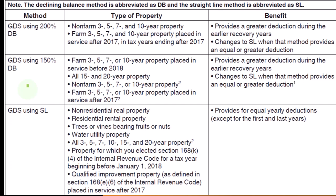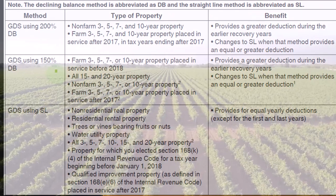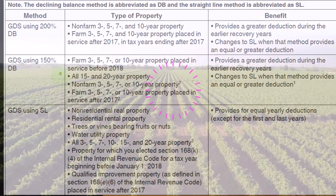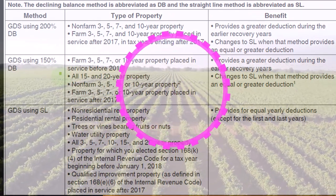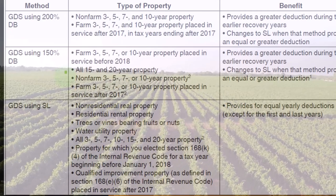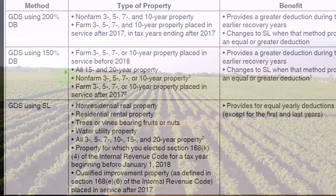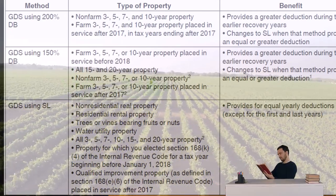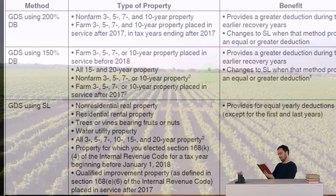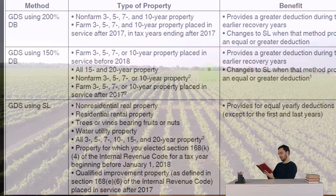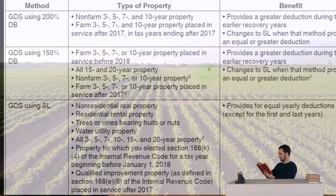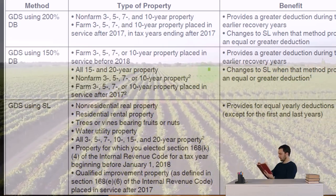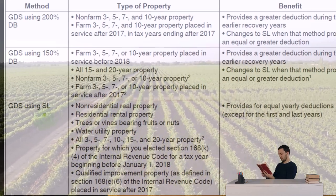GDS using 150 double declining. So this is for form 357, 10-year, all 15 and 20-year property, non-form 357 or 10-year property and form 357 or 10-year. So it provides a greater deduction during the earlier recovery periods — greater than straight line, at least. And then it changes to straight line.